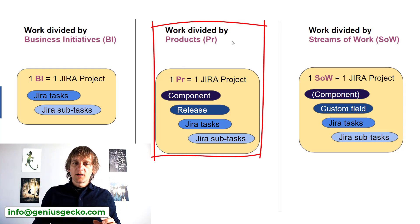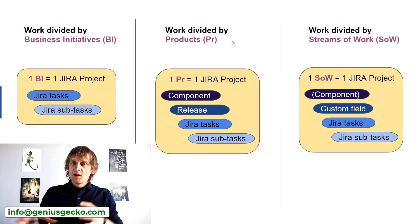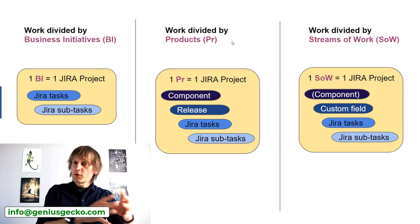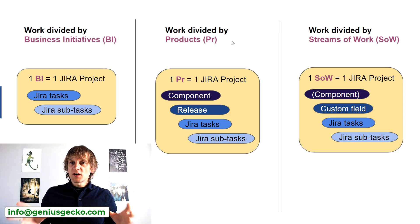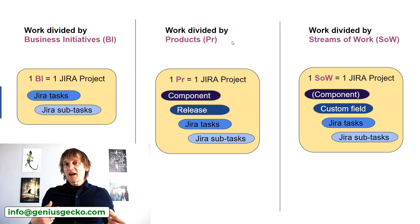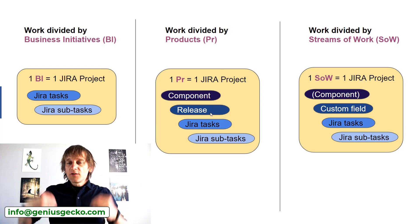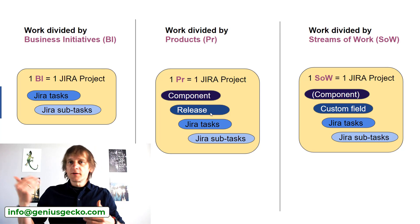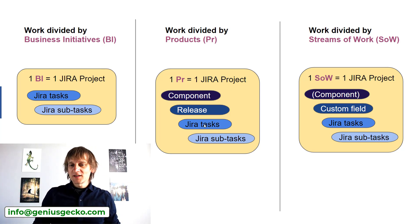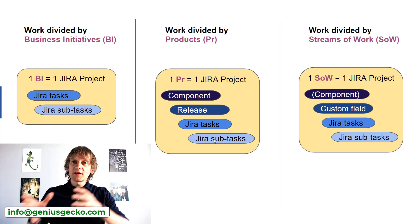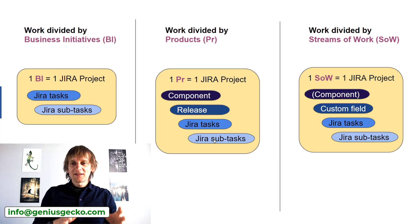The second approach is work divided by products. If you're creating products, it's also a good approach to create one Jira project per product. Each project allows you to create components, manage releases and new versions of your product, and inside those releases you have your epics, user stories, tasks, subtasks, and so on. One Jira project per product — simple as that.